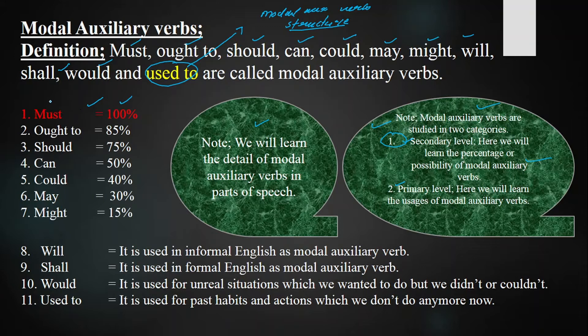At the secondary level, we learn how to change modal auxiliary verbs from active voice into passive voice. We use 'must' when you have full authority or when any action is an obligation — you must do it, and if you don't, you will face consequences. Here at the secondary level, 'must' is used for 100 percent certainty. Now let's begin changing 'must' from active voice into passive voice.